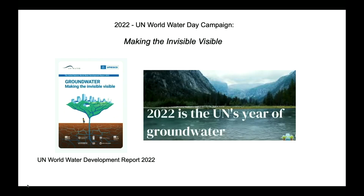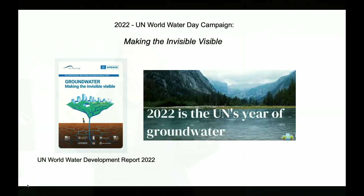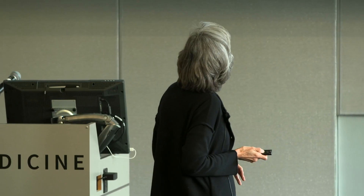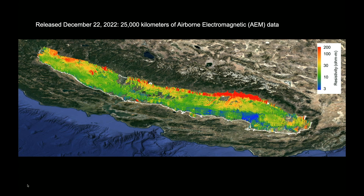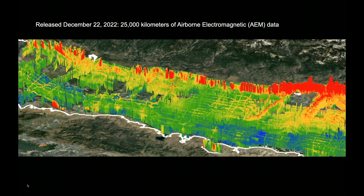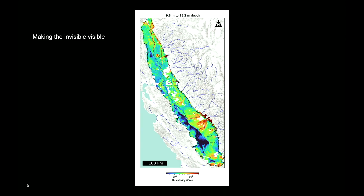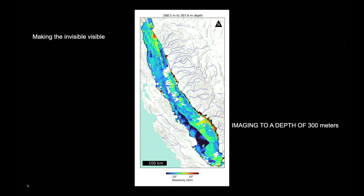In 2022, I saw the UN had declared it the year of making the invisible visible, and I thought they're going to be promoting geophysics all year. Well, they didn't. But what came out that year was even better — the best Christmas present ever. On December 22nd, 25,000 kilometers of airborne EM data were released. These data are slices approximately three kilometers apart, seeing 300 meters below the ground surface in the Central Valley. You can scroll down: 10 meters depth, 20 meters depth, 40 meters depth, 50 meters depth. The red is the coarse-grained sand and gravel, the blue is the fine-grained clay. We can see into the groundwater systems of the Central Valley — absolutely amazing.